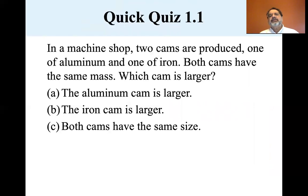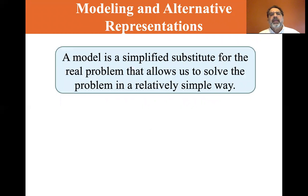Here's a quiz. In the machine shop, two cams are produced, one of aluminum and one of iron. Both cams have the same mass. Which cam is larger? Well, if you look in your table of densities, aluminum is a lighter density material than iron. So to get the same amount of mass, you need more of the aluminum. So which cam is larger? Well, the aluminum cam is larger because it takes more of it to be as massive as the iron one. So there's the answer and we'll stop there. We'll continue with modeling, I believe is the next section.